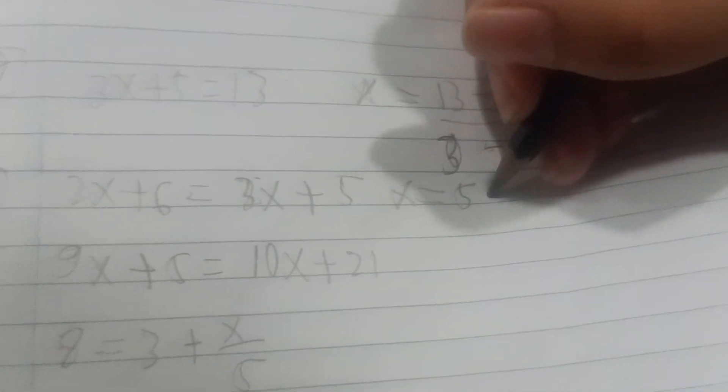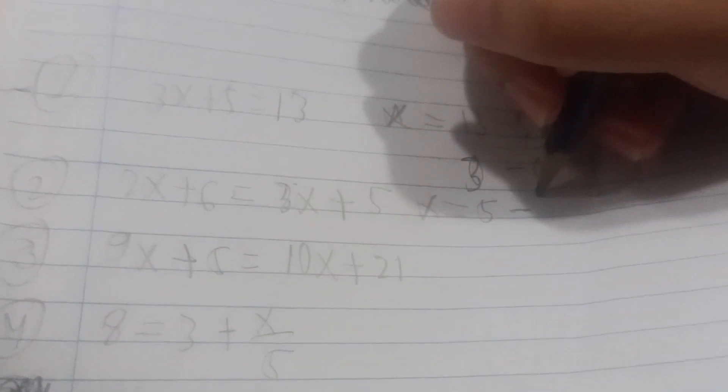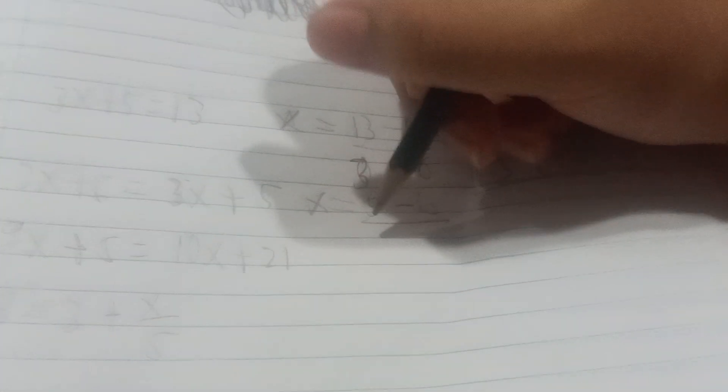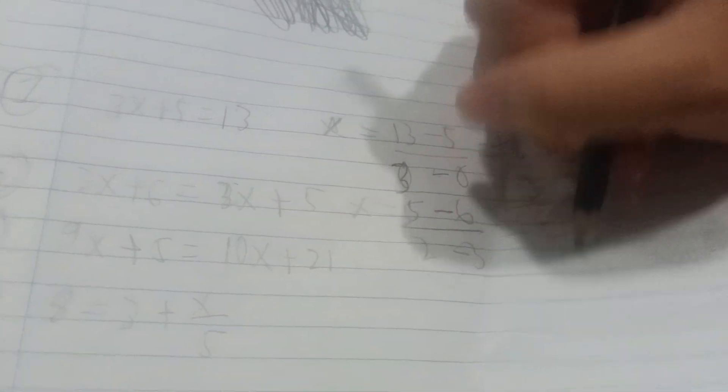minus D minus B. What's B? 6, all over. Okay, what's A? 2. And what's C? 3. So it will be negative 1 over negative 1, which is just one.